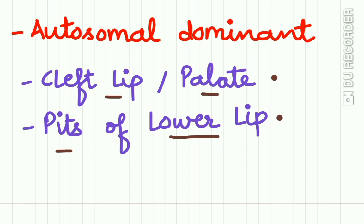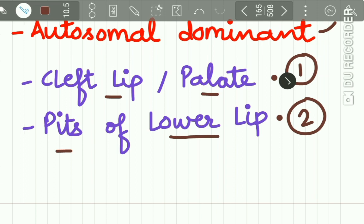The Van der Woude Syndrome is an autosomal dominant syndrome and it includes two features: first, either a cleft lip or a cleft palate, and secondly, there are pits of the lower lip.